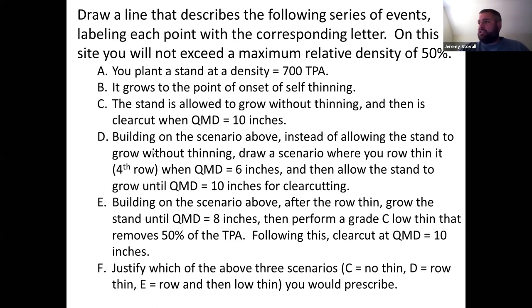Scenario D, you grow the stand for a while, then you fourth row thin it when the QMD is six inches, and then you continue growing it out into a QMD of 10 where it's clear cut. So scenario D is a one thin scenario where that one thin is a row thin.